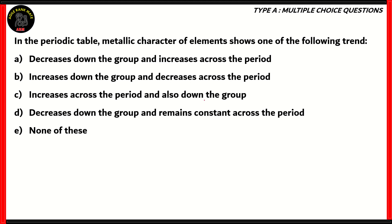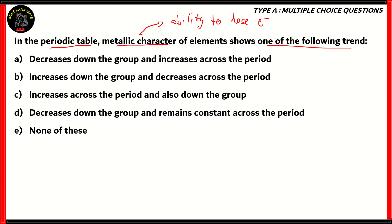Now let's look at the final question of the day. In the periodic table, metallic character of elements shows one of the following trends: decreases down the group and increases across the period; increases down the group and decreases across the period; increases across the period and also down the group; decreases down the group and remains constant across the period; or none of the above. What do we mean by metallic character? Well, metallic character refers to the ability to lose electrons. Metals are called electropositive elements because they lose electrons in order to gain a stable configuration.